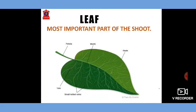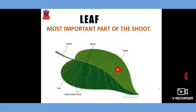Leaf. Leaf is the most important part of the shoot. The plural form of leaf is leaves. Leaves are mostly green in colour. The flat part of the leaf is known as the leaf blade or leaf lamina. In the centre there is a midrib. From the midrib, lines arise which are known as veins. From the veins, a number of lines branch out — these are known as veinlets. The veins carry water to the leaf.